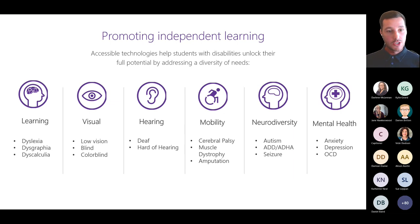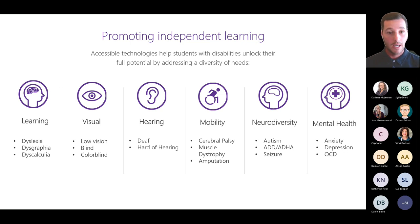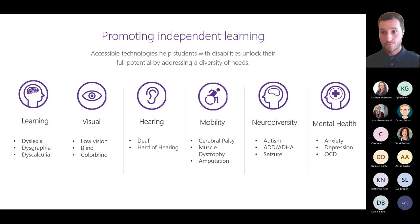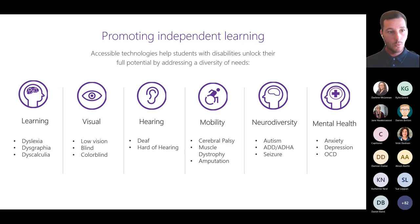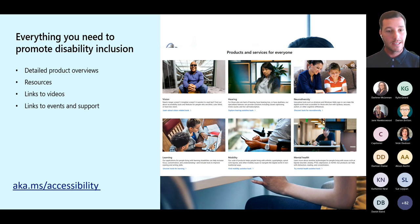Accessibility technology covers a range of areas where we can promote inclusion. In a classroom we need to be responsive to learning or cognitive disabilities such as dyslexia, dysgraphia, and dyscalculia; visual needs including low vision, blindness, and colorblindness; hearing needs; mobility support; neurodiversity; and mental health. Microsoft strives to cover and support a whole range of these.